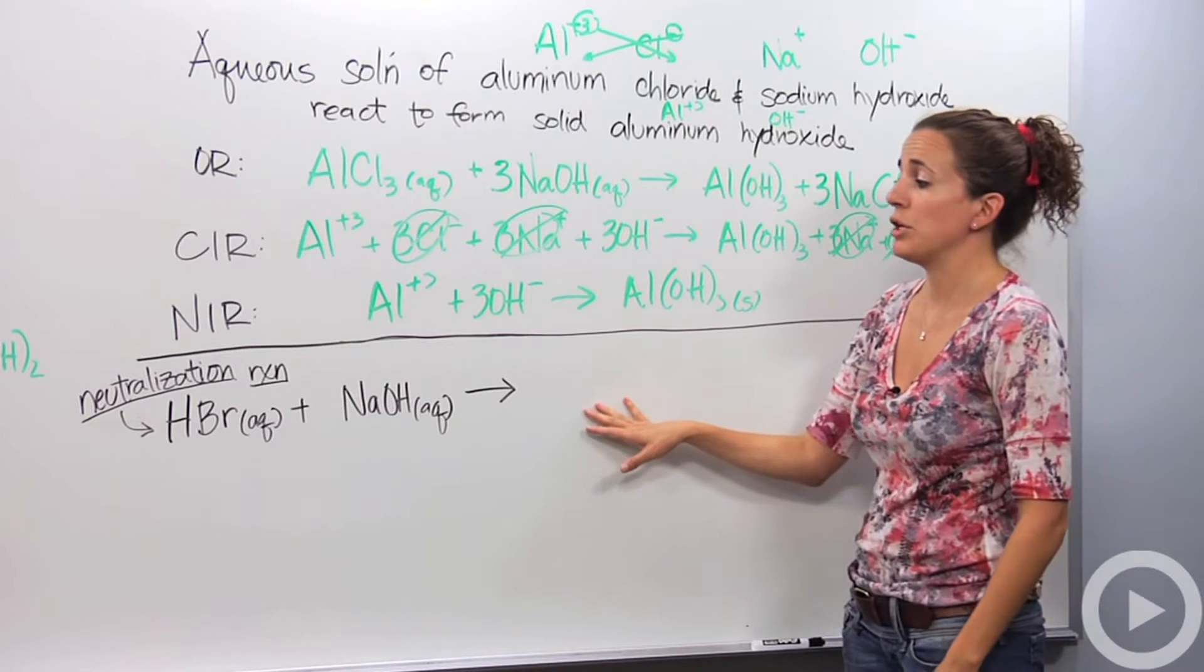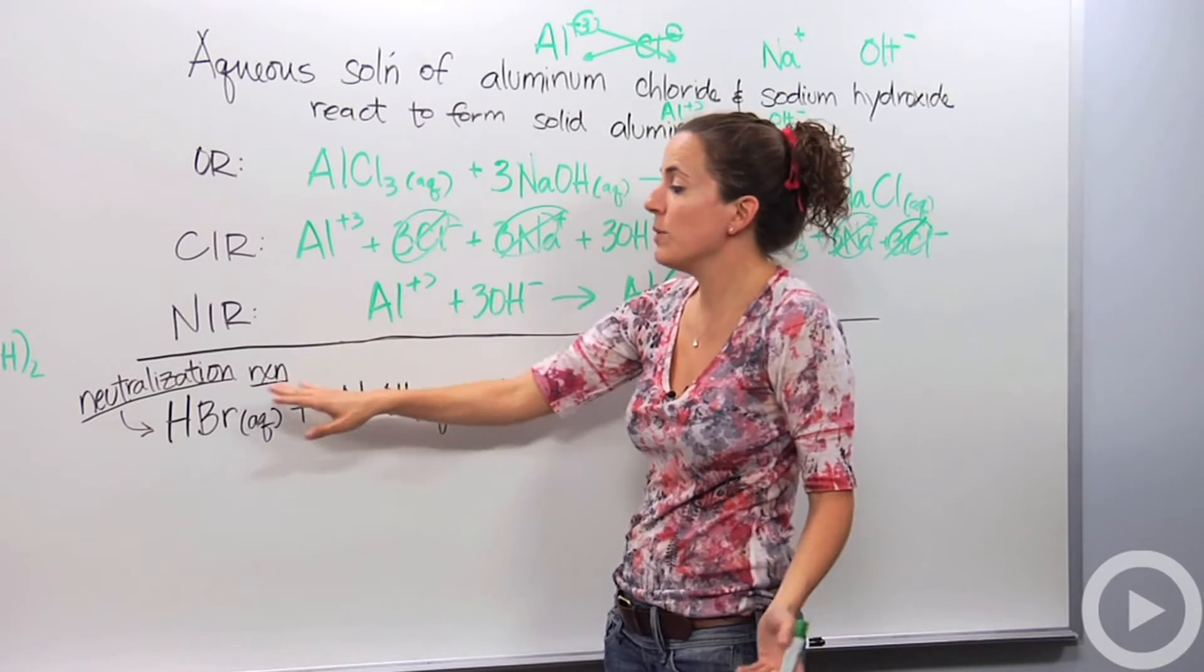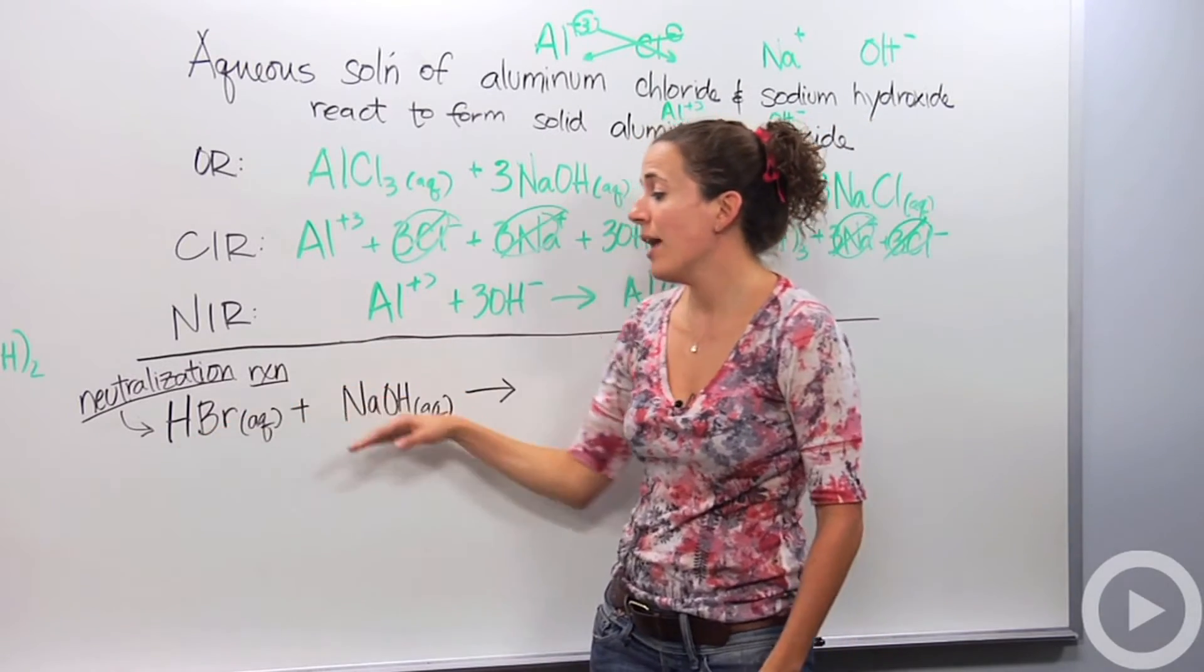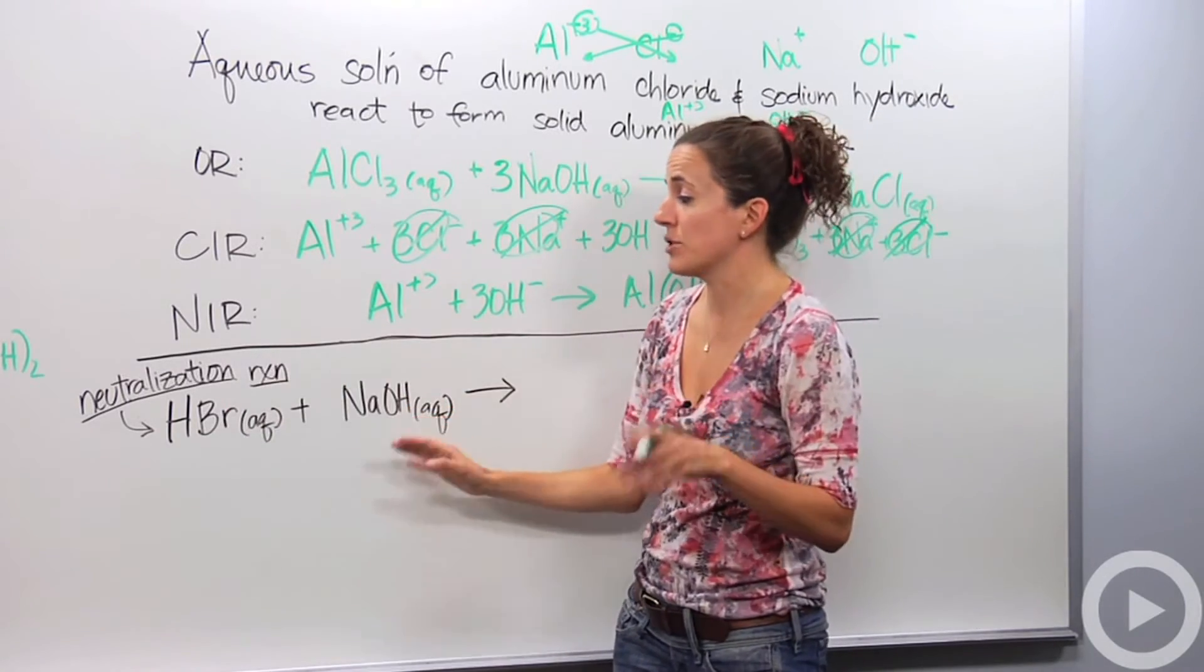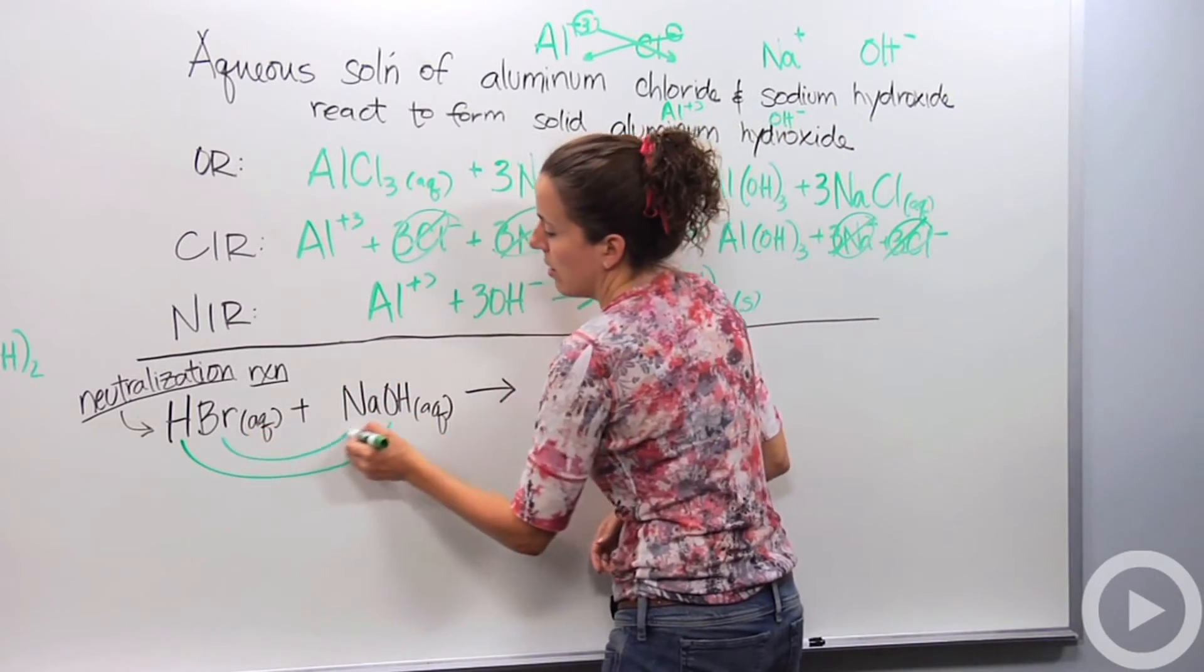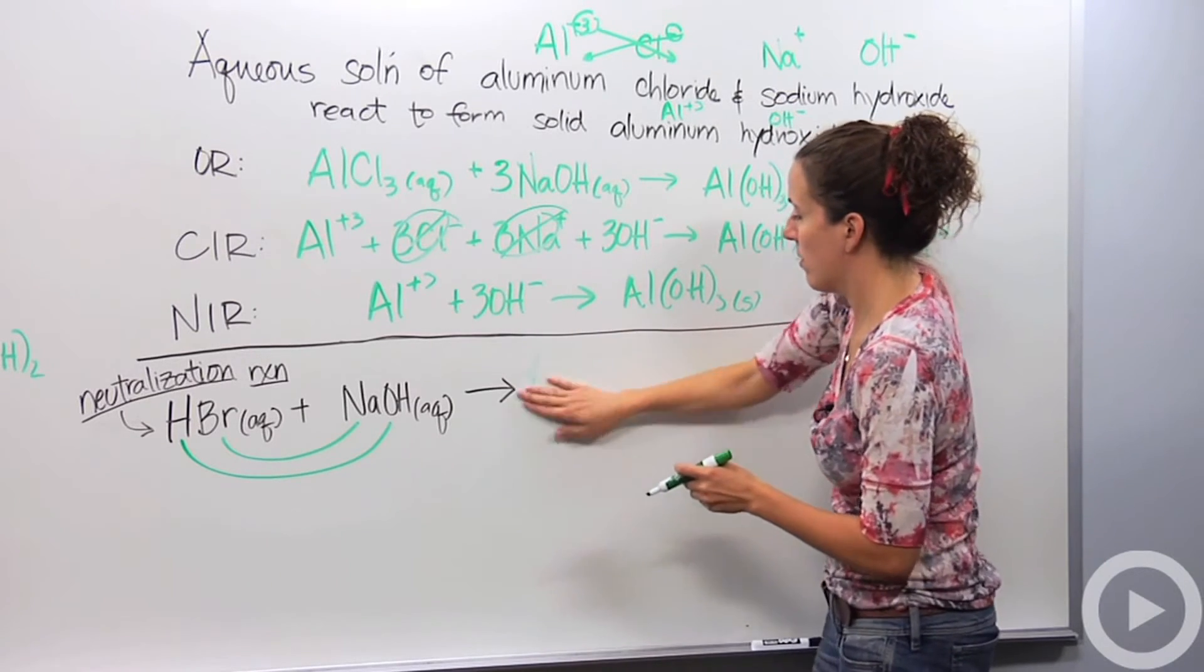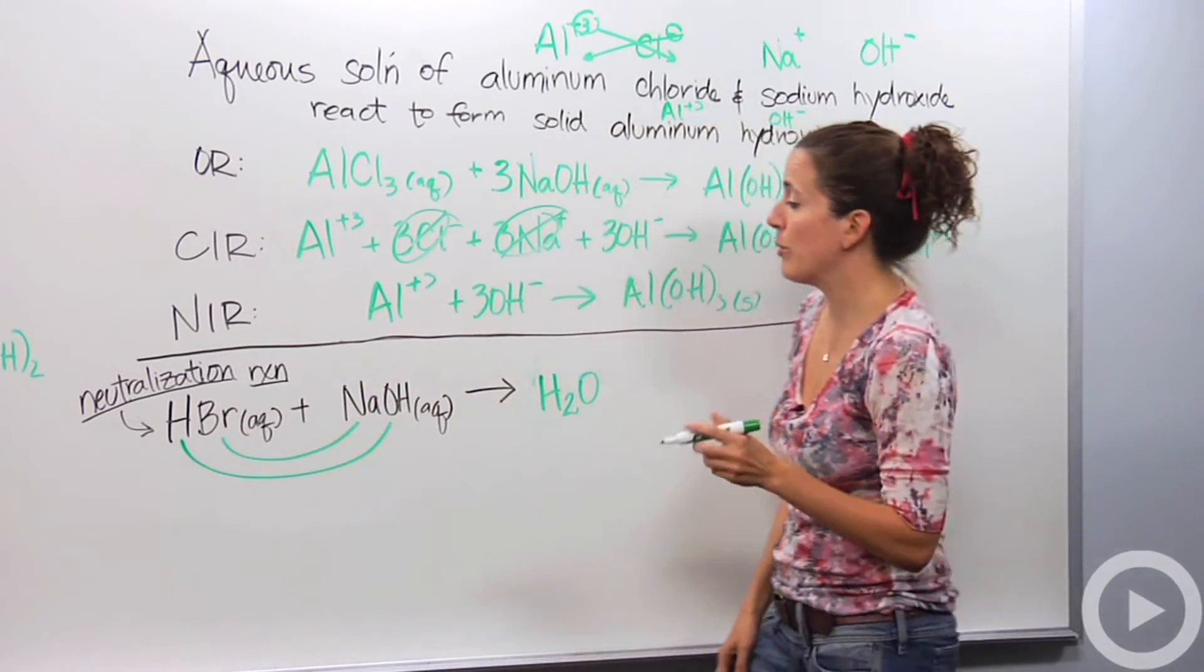The one type of double replacement reaction you might see is what we call a neutralization reaction. This is also a double replacement reaction. The reason we call it neutralization is because we have an acid, hydrobromic acid, then we have sodium hydroxide, which is our base. Together, an acid and a base is going to be neutral, meaning it has a pH of 7. So this is a neutralization reaction. When they trade places, the H is going to be now with the OH. HOH is another way of writing water.